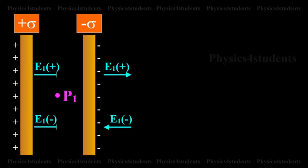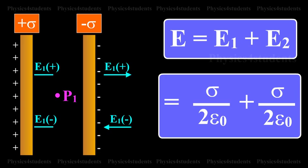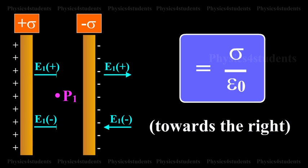When the point P1 is in between the sheets, the field due to two sheets will be equal in magnitude and in the same direction. The resultant field at P1 is E is equal to E1 plus E2. It is equal to sigma divided by 2 epsilon naught plus sigma divided by 2 epsilon naught, it is equal to sigma divided by 2 epsilon naught towards the right.